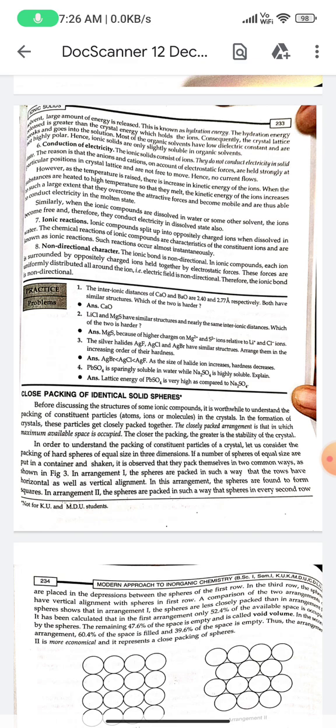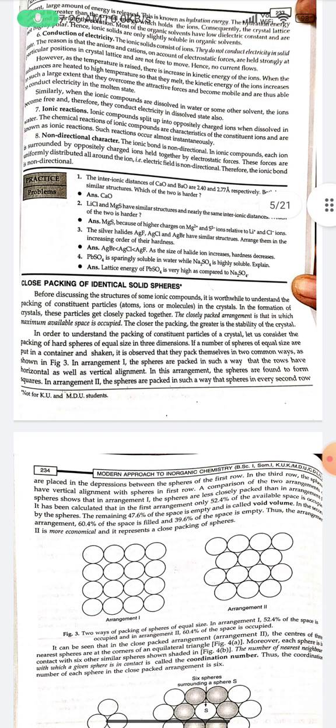Close packing of identical solid spheres: before discussing the structure of some ionic compounds, it is useful to understand the packing of constituent atoms, ions, or molecules in a crystal. In the formation of a crystal, these particles get closely packed together. The close-packed arrangement is one in which the maximum available space is occupied. The closer the packing, the greater the stability of the crystal.